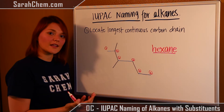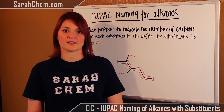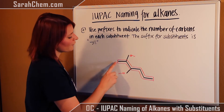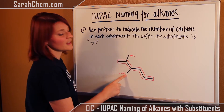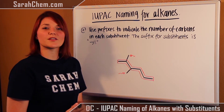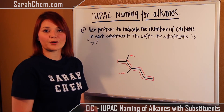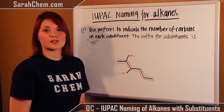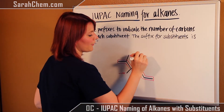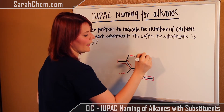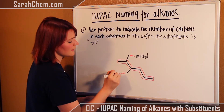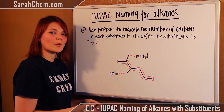Now let's look at everything that is not part of the parent chain — the substituents. As you can see, I've boxed out the parent chain, and these two groups that fall outside that box are the substituents. I need to give them a name. When naming a substituent, the number of carbons gives you the prefix, and the suffix is '-yl'. This substituent has only one carbon, so its prefix is 'meth', giving us a methyl group. The other substituent is identical — also one carbon — so it is also called a methyl group.